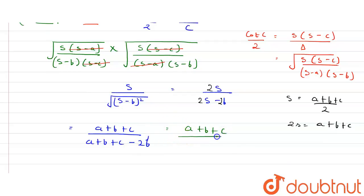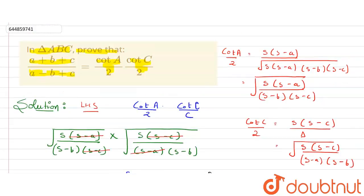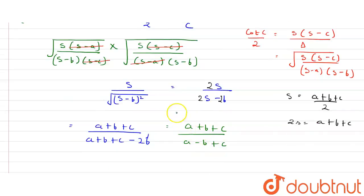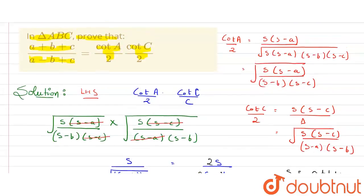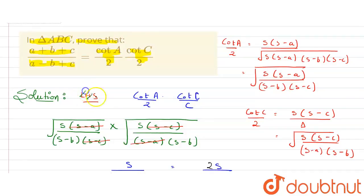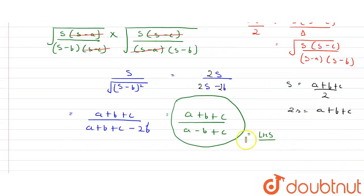Simplifying the denominator: a + b + c - 2b = a - b + c. So the expression becomes (a + b + c) / (a - b + c), which is exactly the RHS. Note: we started from the RHS and concluded it equals the LHS — there was a minor labeling mix-up at the start. This completes the proof.